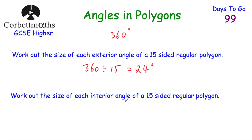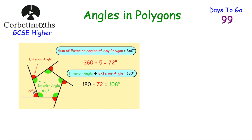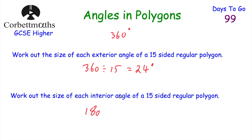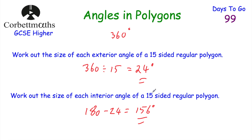Now find the size of each interior angle of a 15-sided regular polygon. The interior angle and the exterior angle always add together to be 180 degrees, so 180 subtract 24 equals 156 degrees. Each interior angle is 156 degrees. Note you could also have done (15−2)×180 ÷ 15 to get 156 — but using the exterior angle approach is probably a little bit simpler.